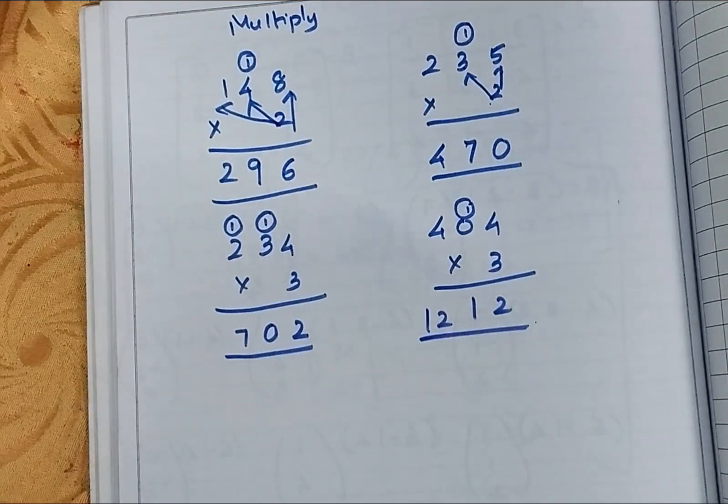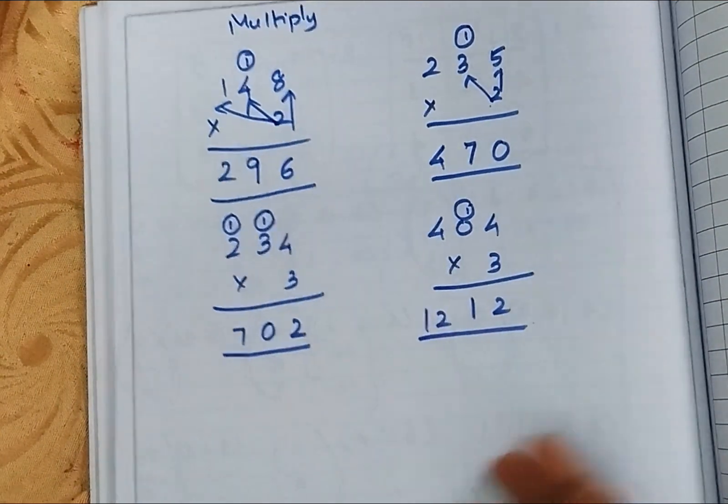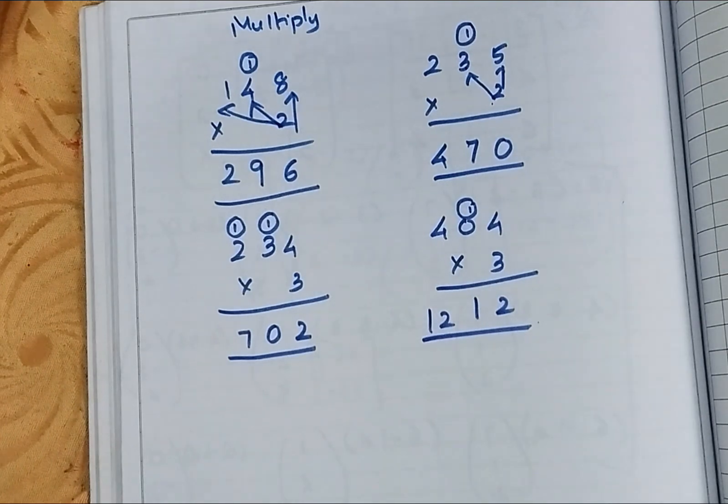So if you have followed that single digit multiplication, now this will be very easy. In this also, you have to do 20 sums.